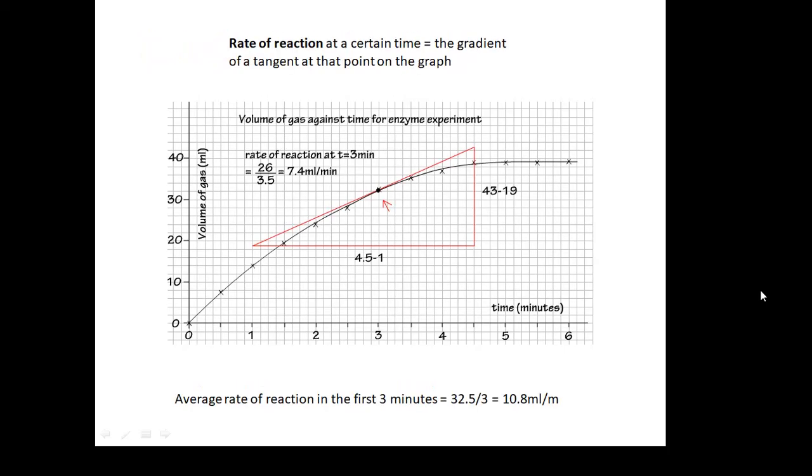To calculate the rate of reaction, what you do at a certain time is draw a point on the graph, and then you draw a tangent. Draw a tangent, and then what's the gradient of the tangent? And the gradient of the tangent is the change in the y value, which is the change in the volume of gas, divided by the change in time, the change in the x value. That's delta y over delta x. That's the gradient of the graph.